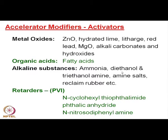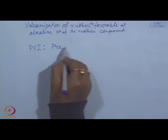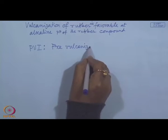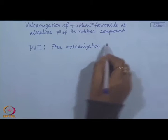Other alkaline substances like ammonia, diethanol or triethanol amine, amine salts, or reclaimed rubber can also be used to increase the vulcanization rate. After accelerators and accelerator activators, there is another class of compound used in rubber products known as retarders. Retarders are sometimes called PVI — pre-vulcanization inhibitors.